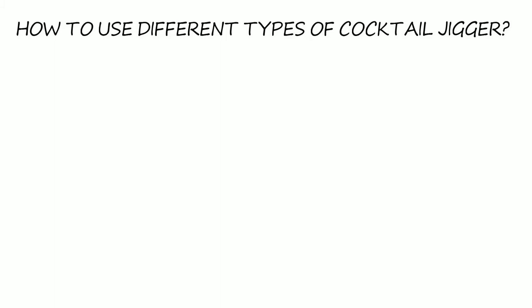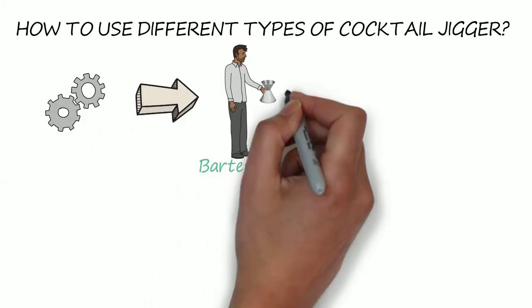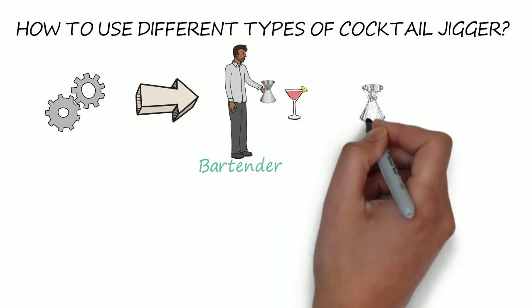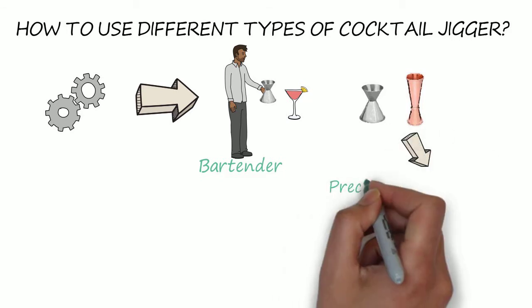How to use different types of cocktail jigger. Jiggers are tools used by bartenders to measure ingredients when making cocktails and are available in different sizes and styles. A set of measuring tools is important as it helps you achieve precisely balanced drinks.